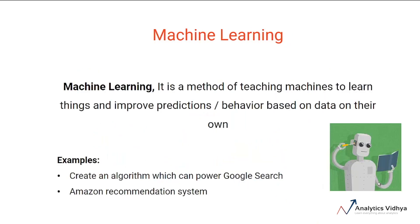Finally, one of the most common buzzwords you would hear today — what is machine learning? Machine learning is a method of teaching machines to learn things and improve predictions based on data on their own. For example, creating an algorithm which continues to become better based on consumer behavior is an application of machine learning. All the big systems like Google Search or Amazon's recommendation system use machine learning to make themselves better as they collect more and more data.